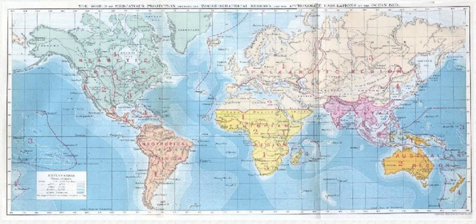Biogeography is the study of the distribution of species and ecosystems in geographic space and through geological time. Organisms and biological communities often vary in a regular fashion along geographic gradients of latitude, elevation, isolation and habitat area.